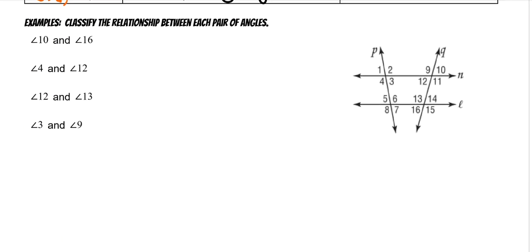Now we have to classify these angle relationships. Looking at angles ten and sixteen — this is the transversal in that case. They're on the outside and across from each other, so crisscross on the outside is alternate exterior.